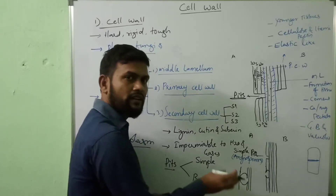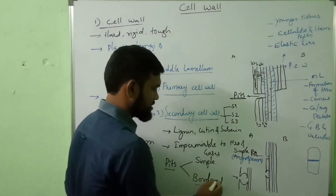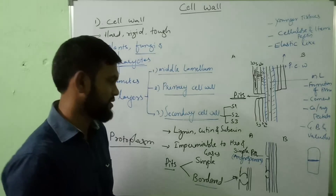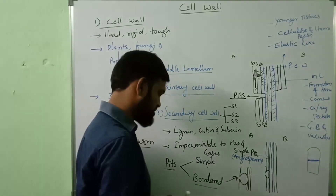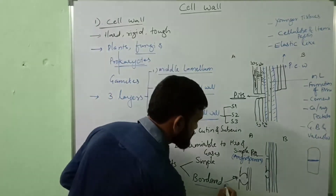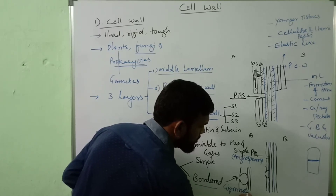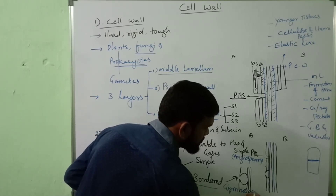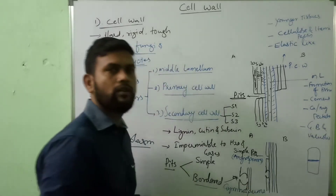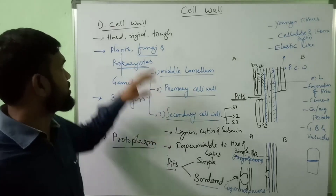In border pits, the diameter is not equal. Such pits are called border pits. Border pits are found in gymnosperms.